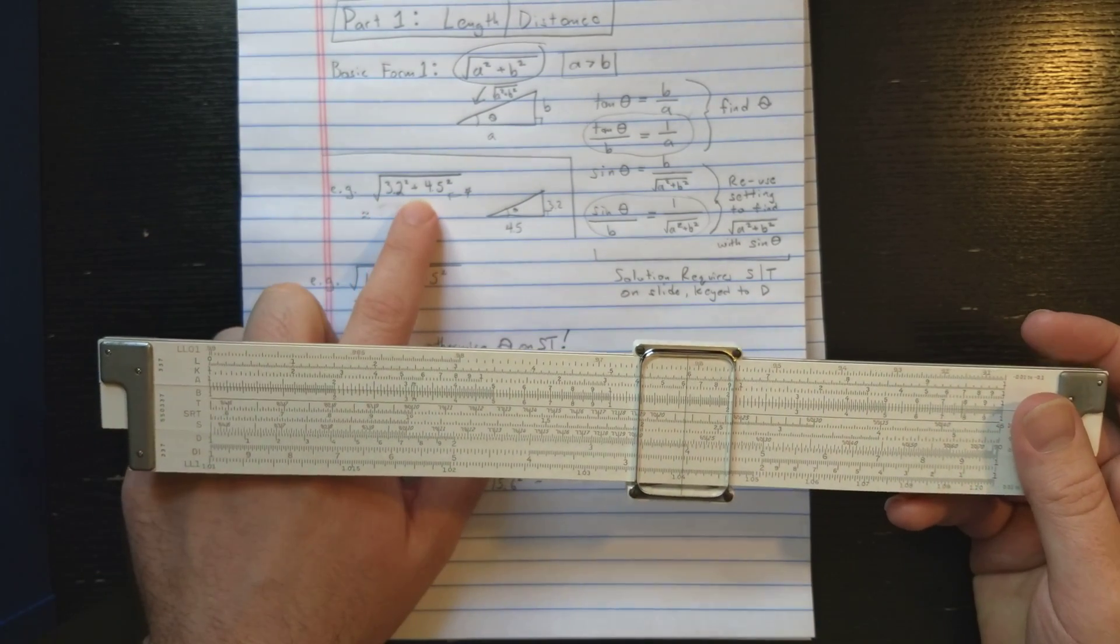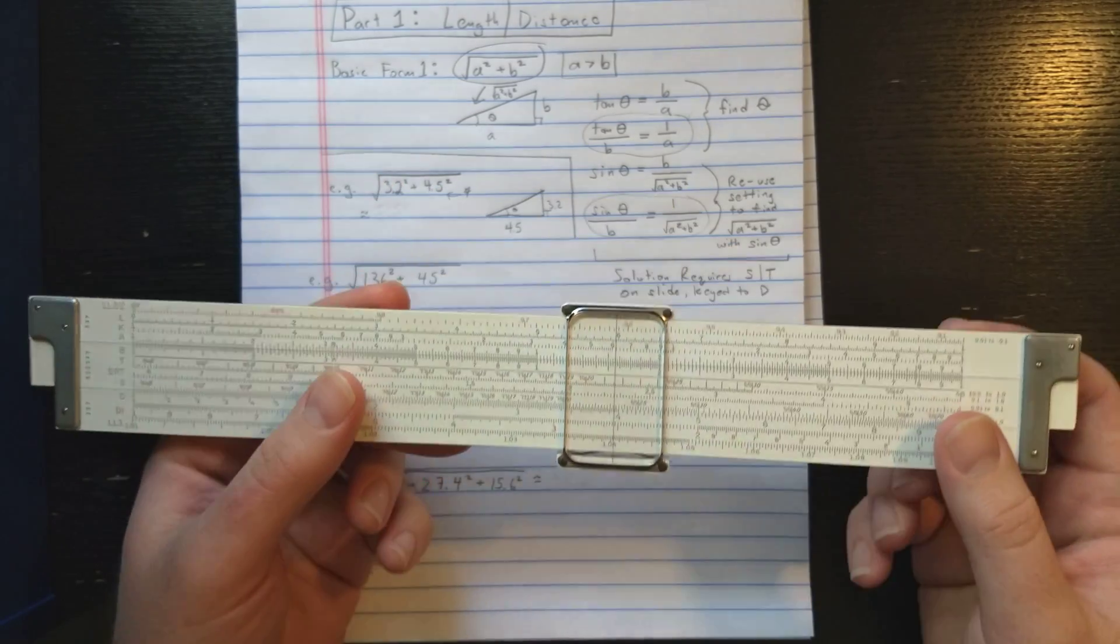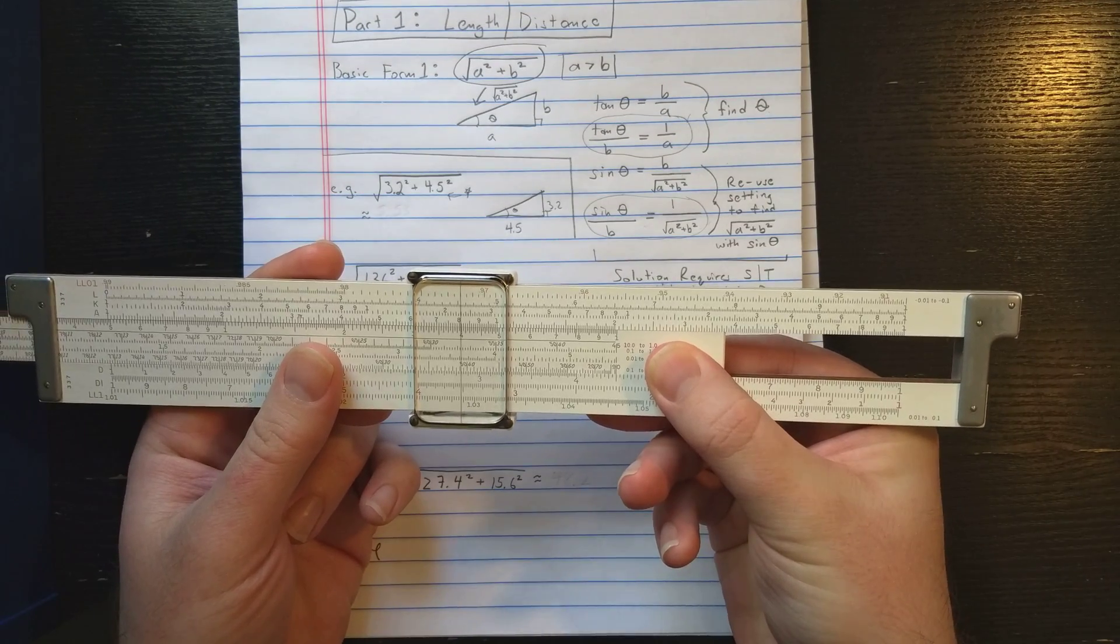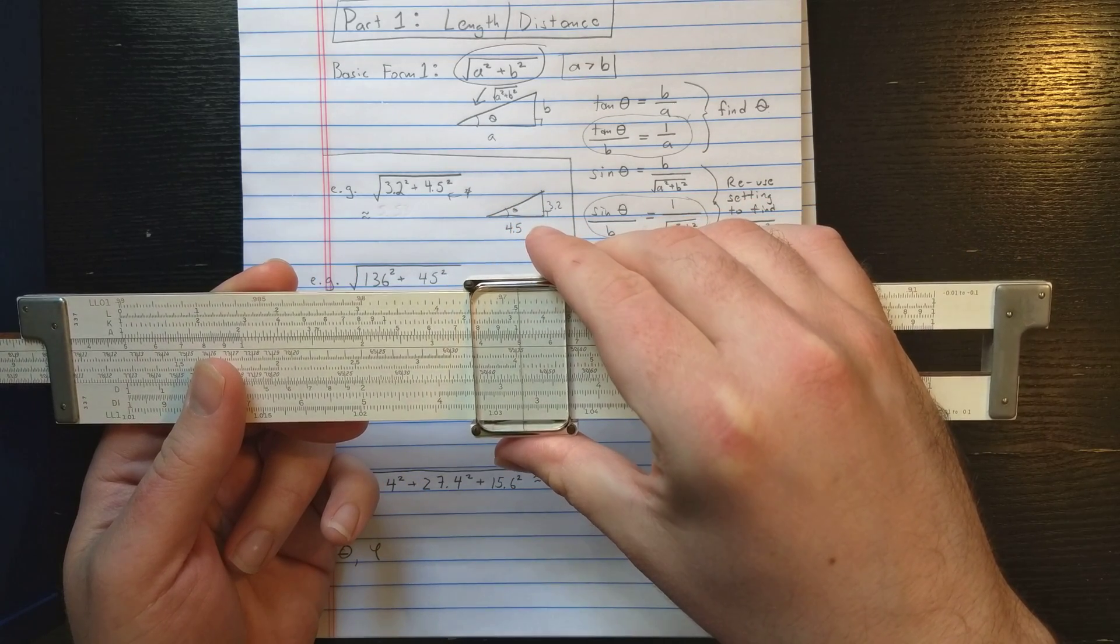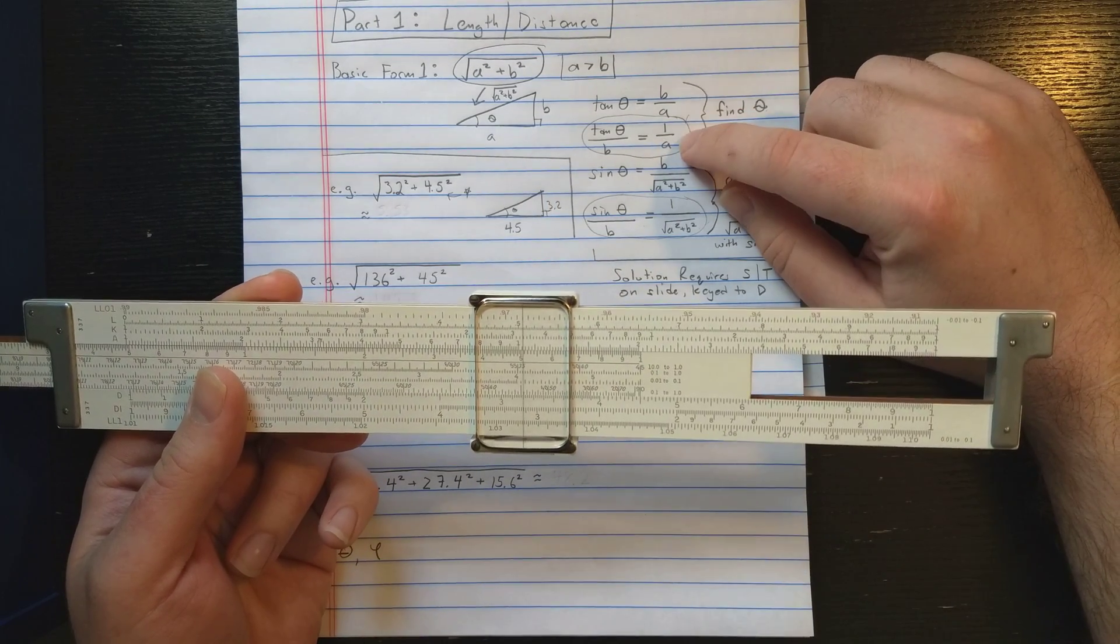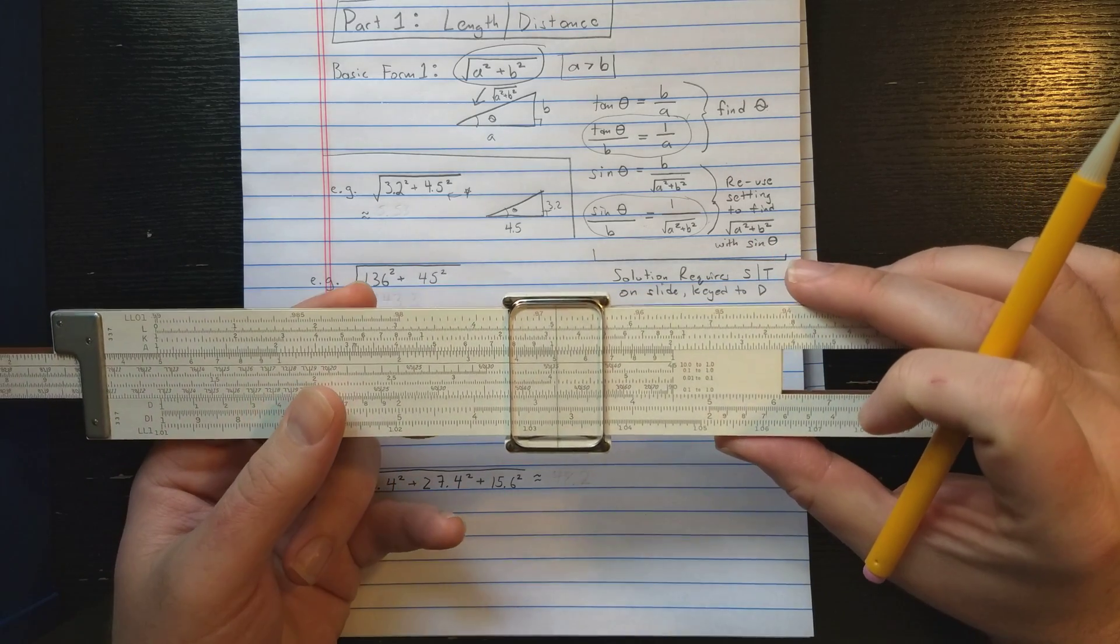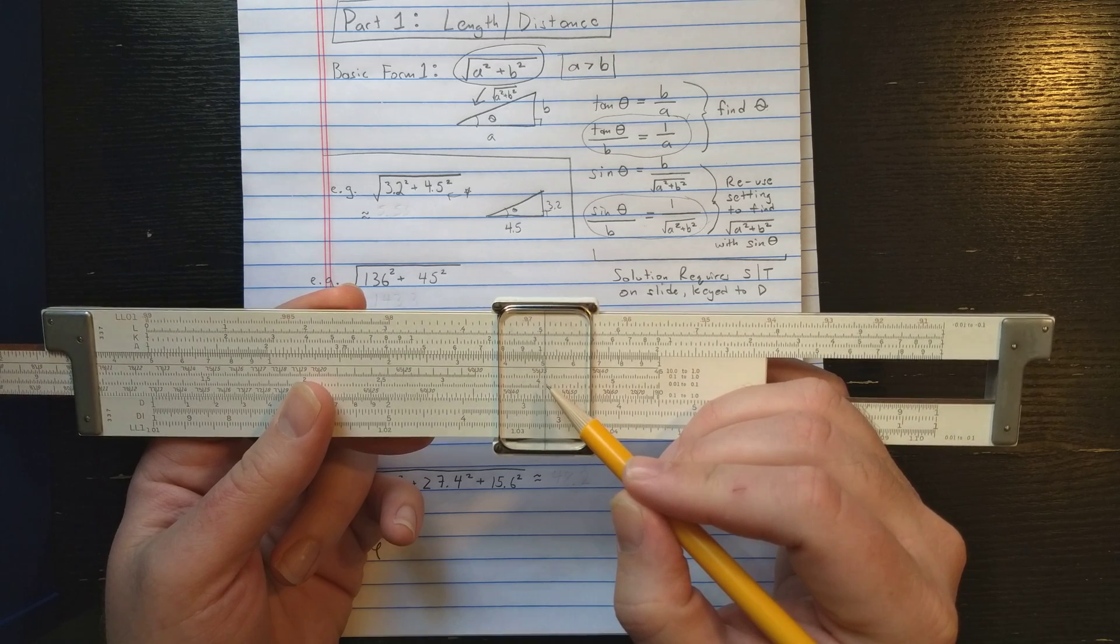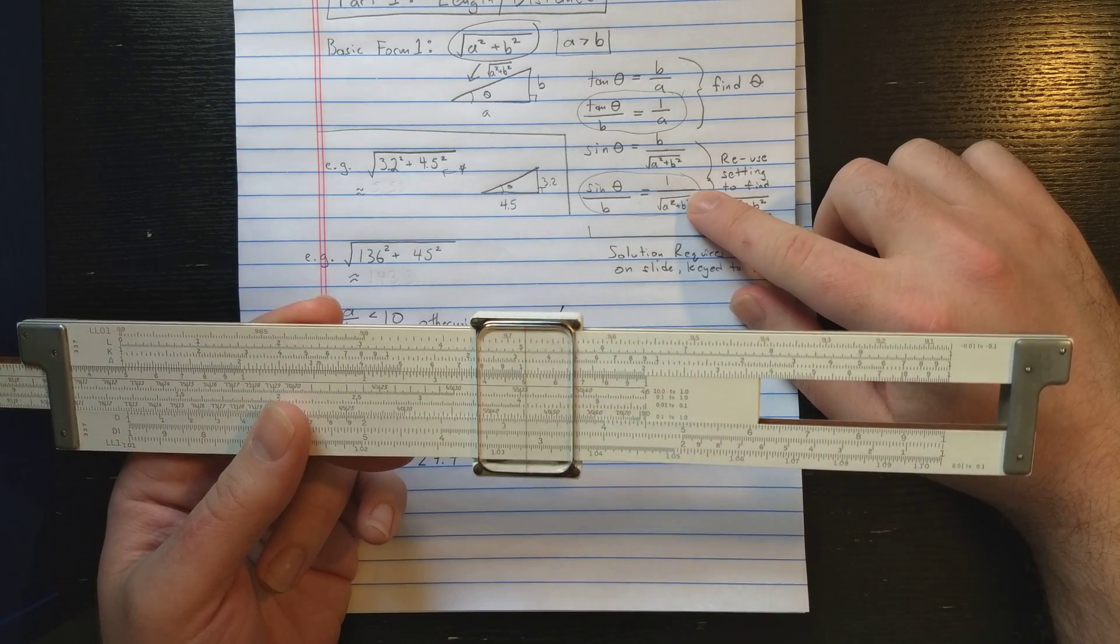Let's look at the first example, 3.2 squared plus 4.5 squared. Again, start with the largest number. So what I'm going to do is put the index here over the 4.5 right here. Then I'm going to slide the cursor to the 3.2 on C. What I've done is I've set up this proportion. And so on the T scale, what I should be reading is the angle theta. So I'm reading that right here. That looks like 35.4 degrees.